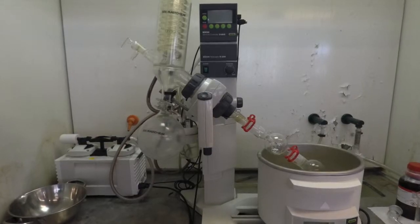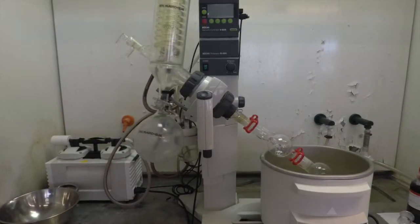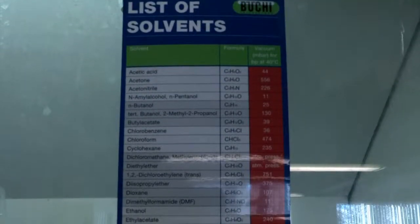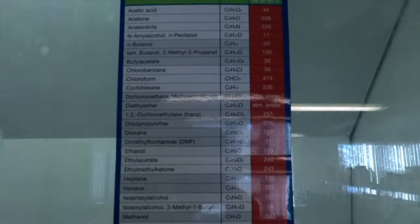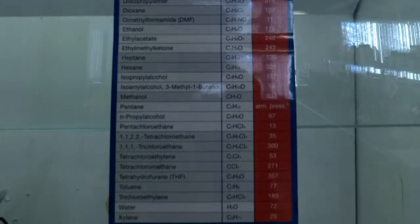Before beginning the evaporation process, it's good to know the pressure required for your solvent to evaporate at 40 degrees Celsius. On the hood, there is a handy guide that lists the most common solvent's boiling points at this temperature.